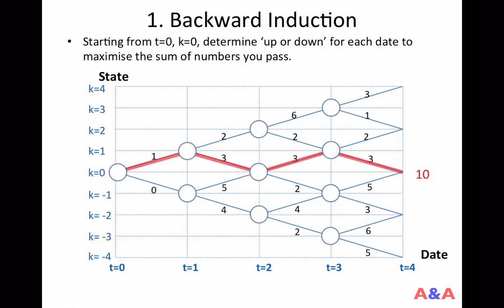A straightforward way to solve this optimization problem is to try these 16 paths one by one — good math exercise for 10-year-olds. But at least one of them would realize that if you start this problem from the back, it becomes much, much easier compared with trying all 16 possibilities. That's backward induction.